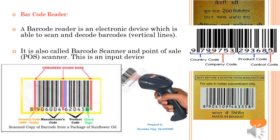Students, in a barcode the first three digits represent the country code, after that four digits represent the manufacturer code, after that five digits represent the product code, and the last digit represents the control code. If you have purchased a product from the market, you see black and white vertical lines — this is called the barcode of that product. Also, barcodes starting with 890 represent the India code, meaning the product is made in India.